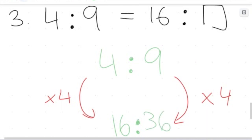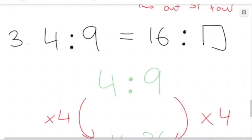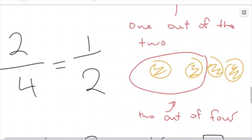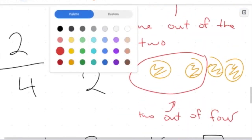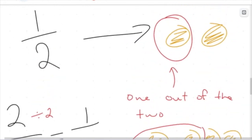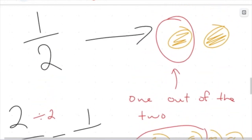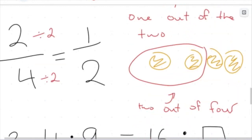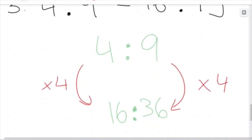It's the same thing as equivalent fractions. Before we asked: what can you do to the numerator and denominator to get to one half, and we divided top and bottom by 2. Or we can multiply top and bottom by something to get a bigger equivalent fraction — for example, to get from one half to two quarters, multiply numerator and denominator by 2. We're doing the same thing with ratios.